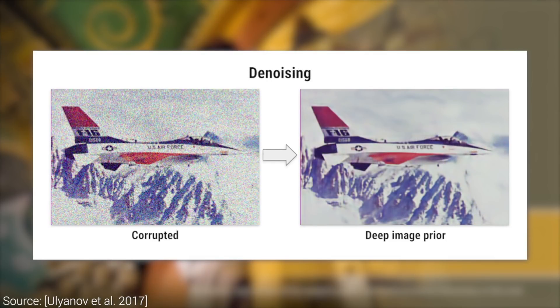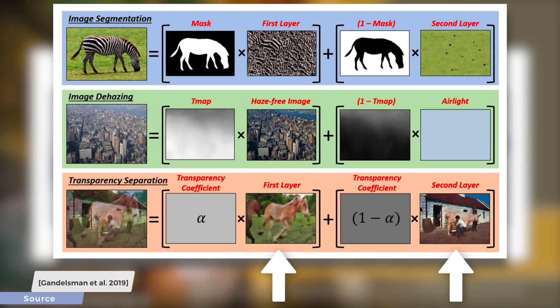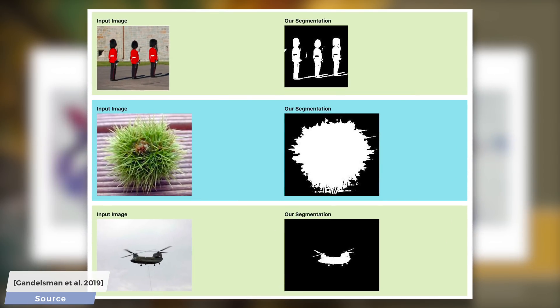This new method is able to subdivide an image into a collection of layers, which makes it capable of doing many seemingly unrelated tasks. For instance, one: it can do image segmentation, which typically means producing a mask that shows us the boundaries between the foreground and the background.